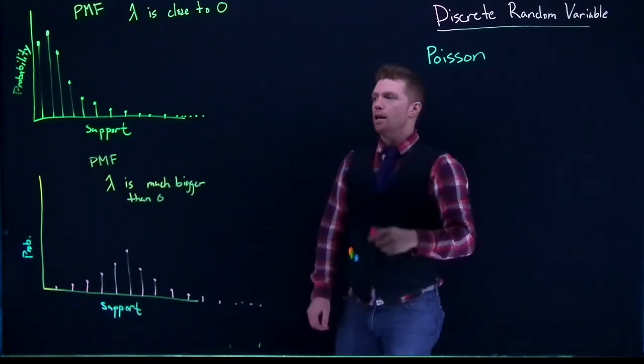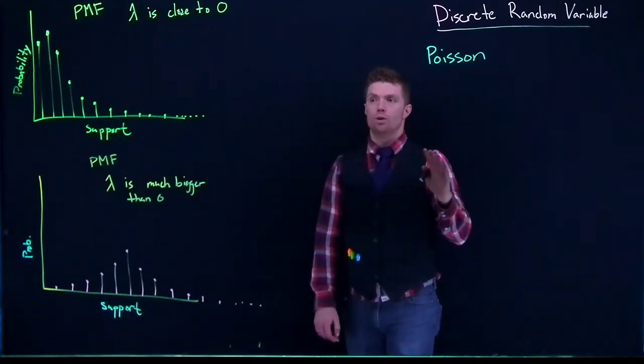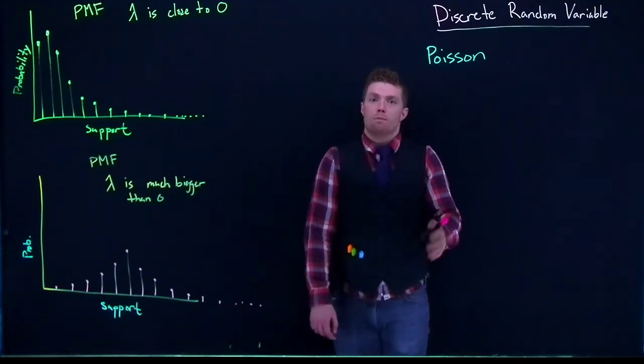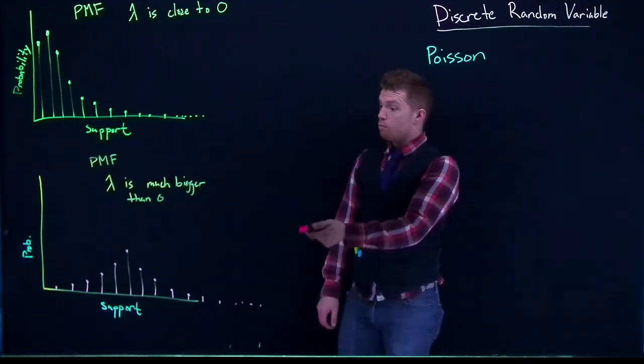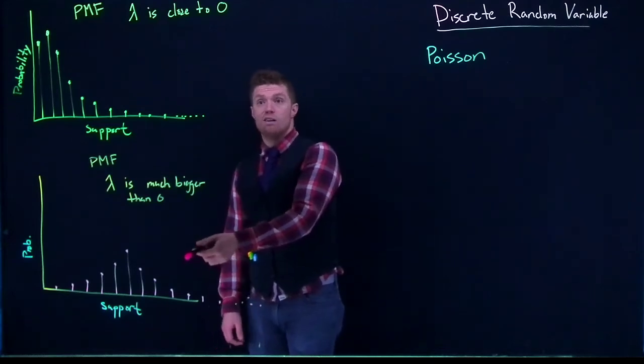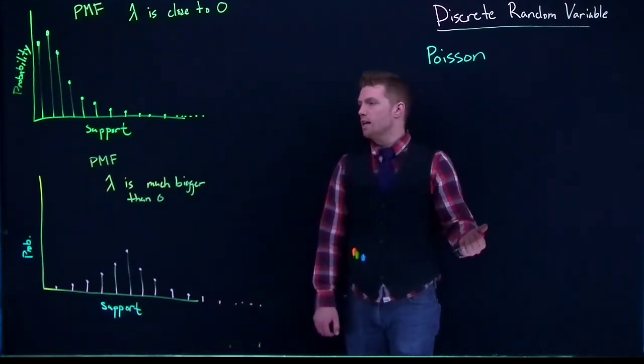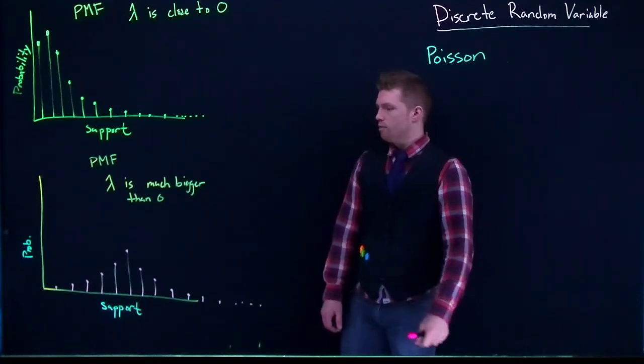Now in the binomial, we saw how it also got skewed the other direction as it got crammed up against the ceiling or the maximum value. The thing with Poisson though is, is there a maximum value? And the answer is no, there's no ceiling to this data. It can continue on basically forever.